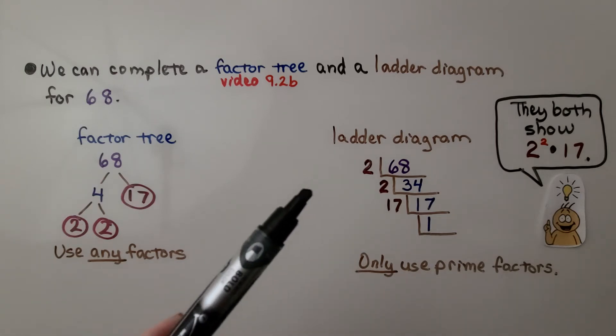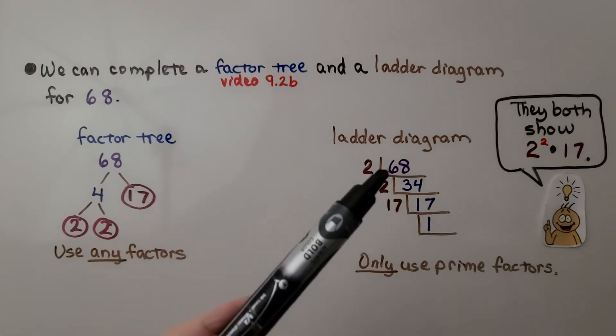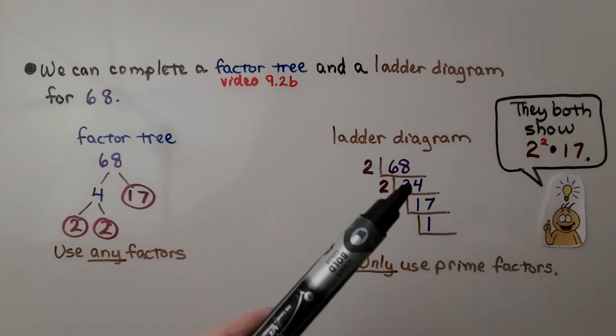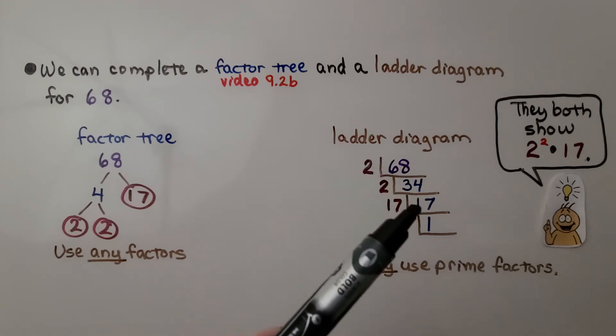For our ladder diagram, 68 is an even number. We can divide it by 2 and get 34. We can divide 34 by 2 and get 17. And the only factors for 17 are 17 and 1. So that's a prime number.